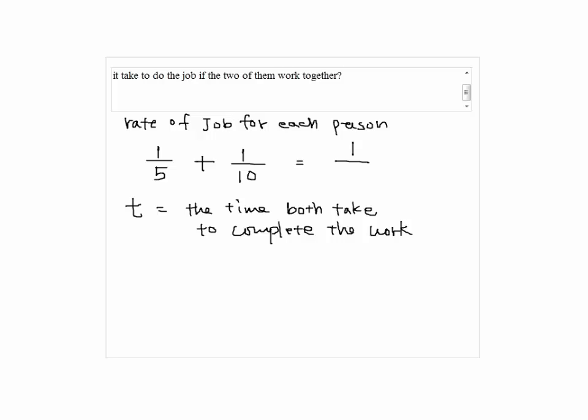If they work together, they can finish in t hours, so they finish one out of t job in one hour. So the equation is one-fifth plus one over ten equals one over t.